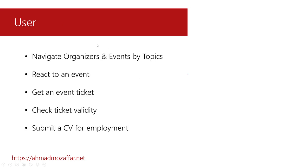From the user perspective, the user can navigate all organizers existing in the system, check events by specific criteria with advanced filtering, react to events, reserve a ticket, check ticket validity, and submit a CV for employment. I've tried to add as many functions as possible to cover all aspects needed in real-world experience — whether you are developing cloud applications, learning Blazor, or just learning the API. All of this is going to be covered.